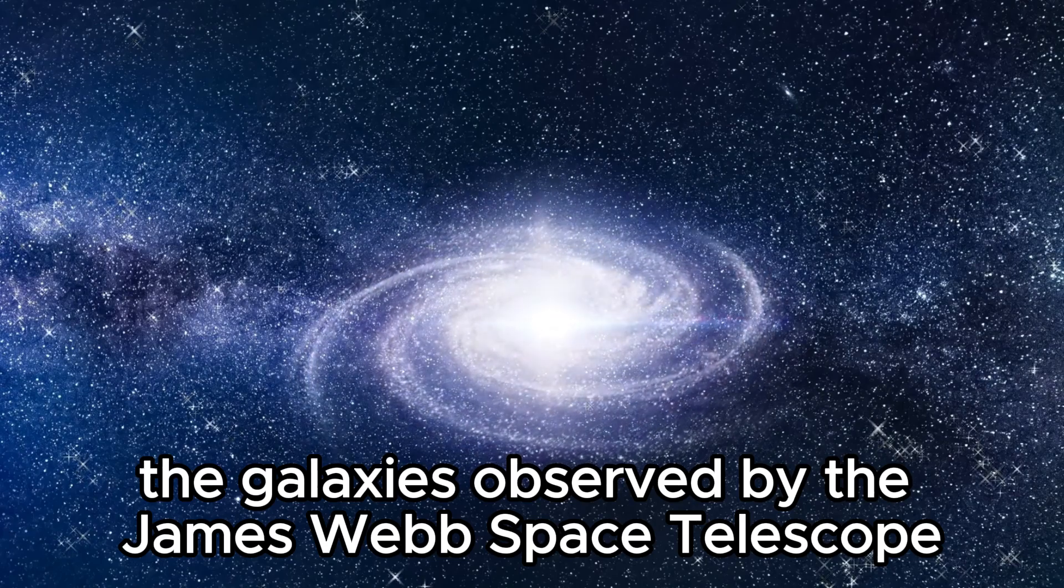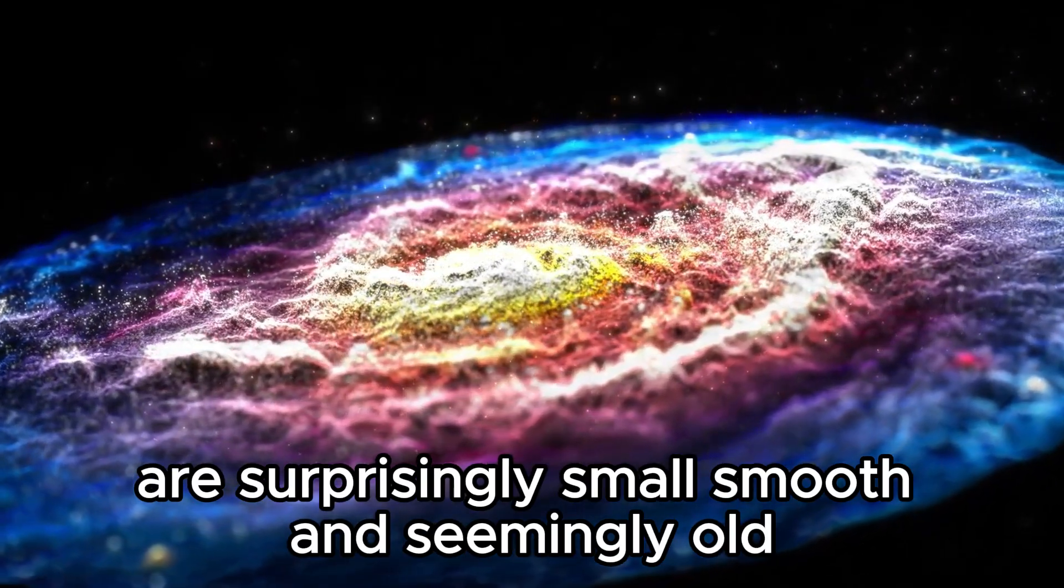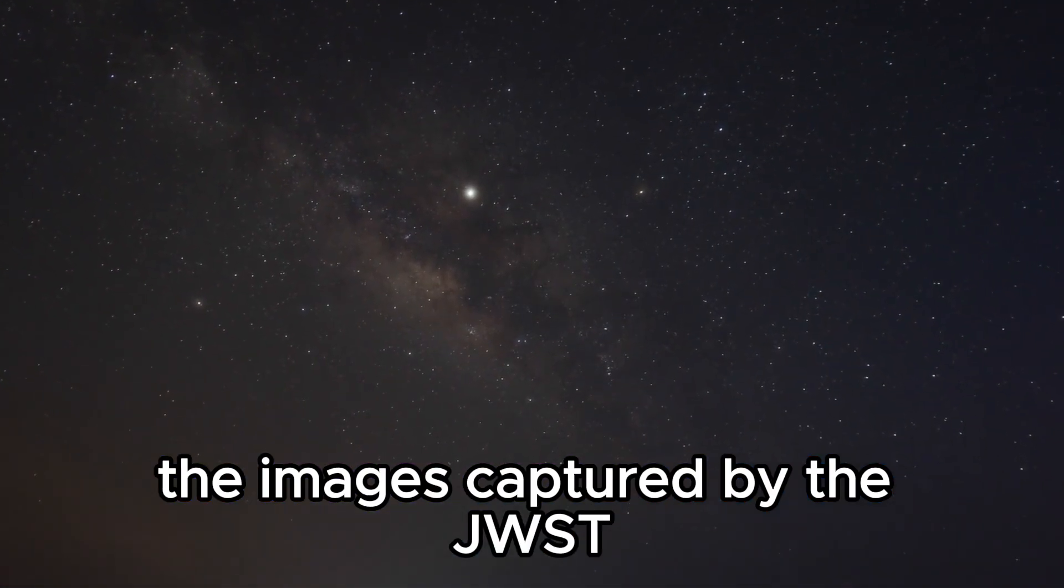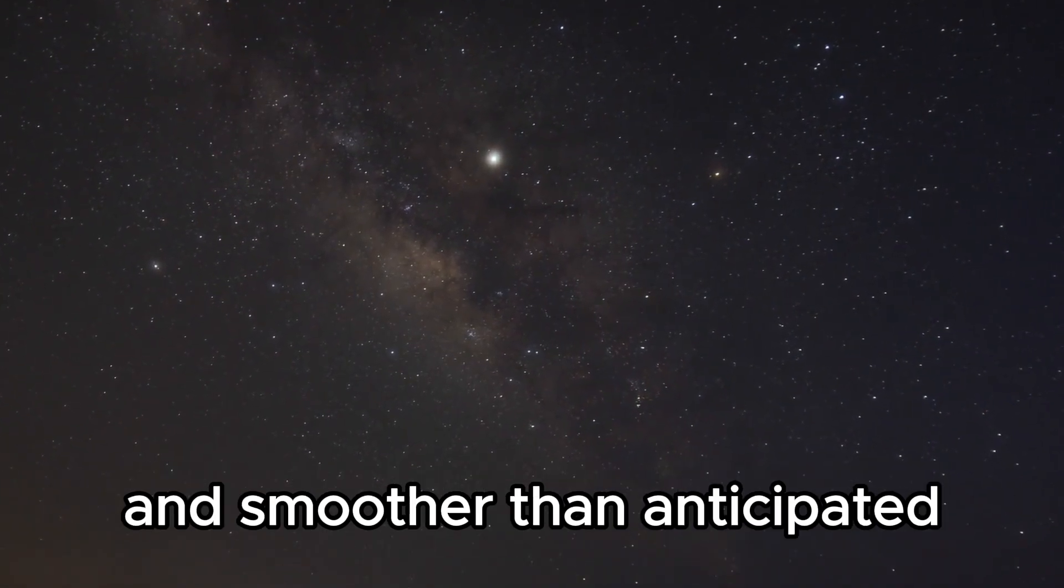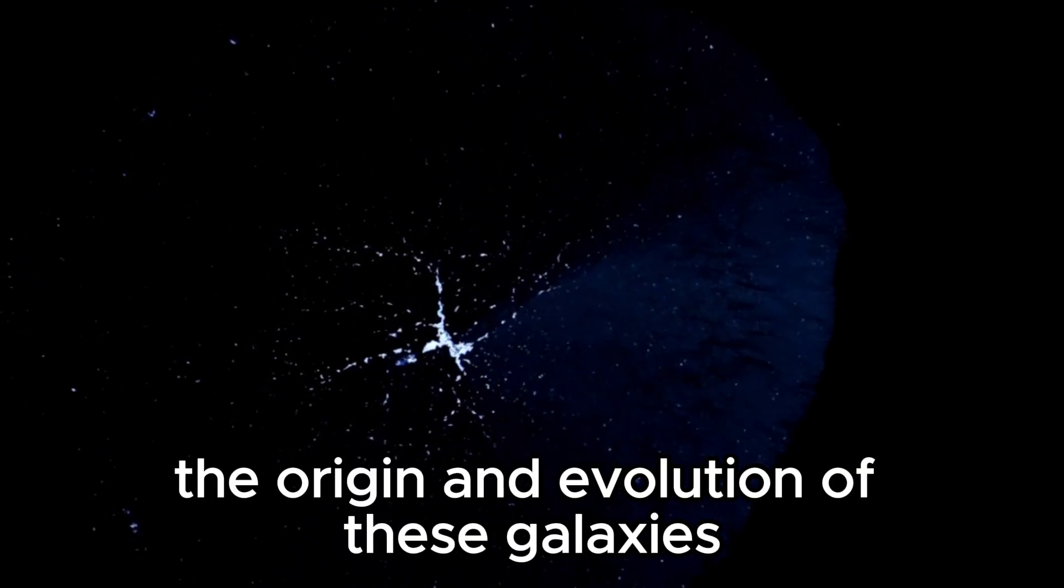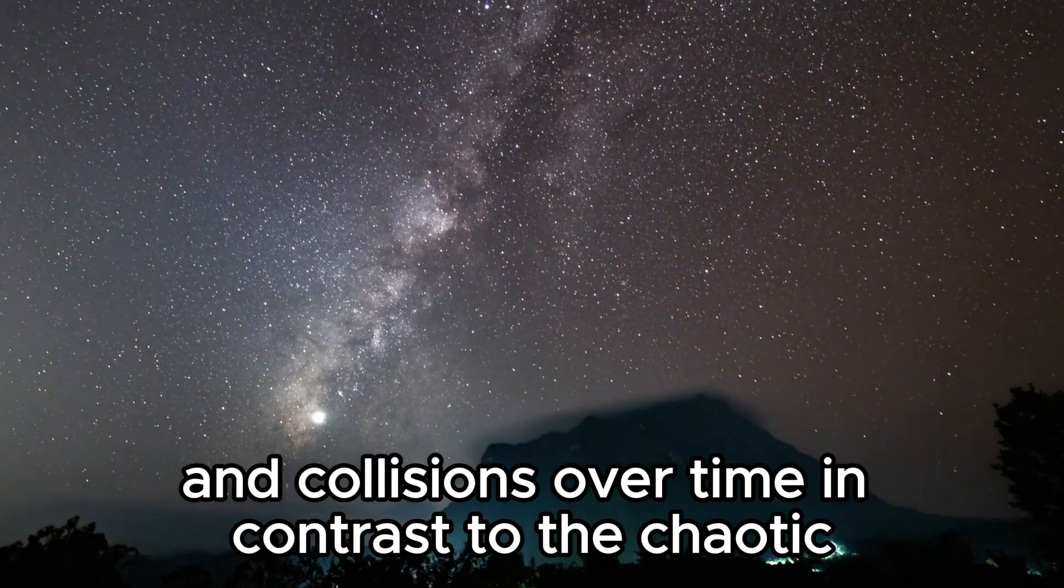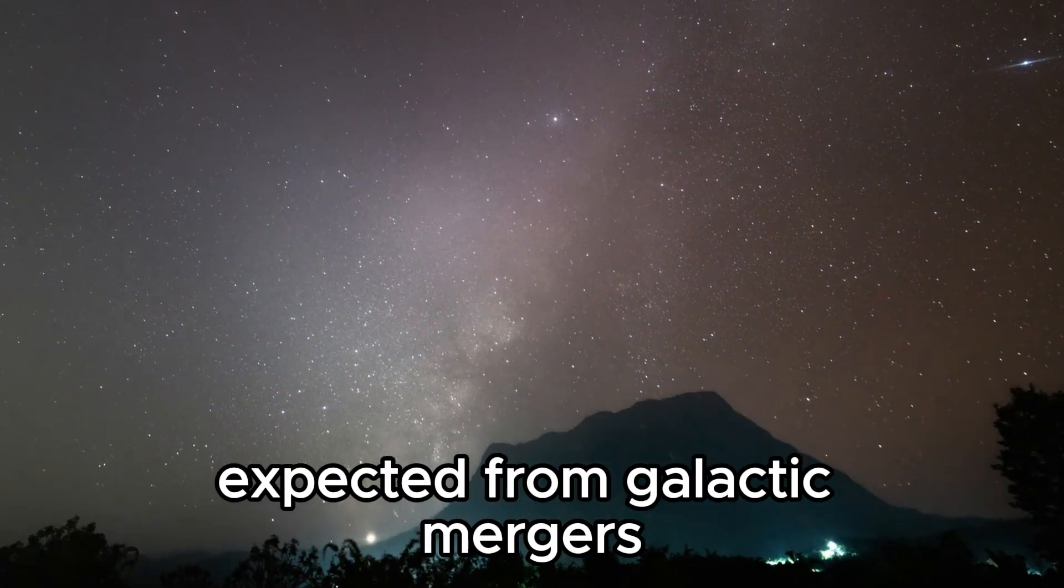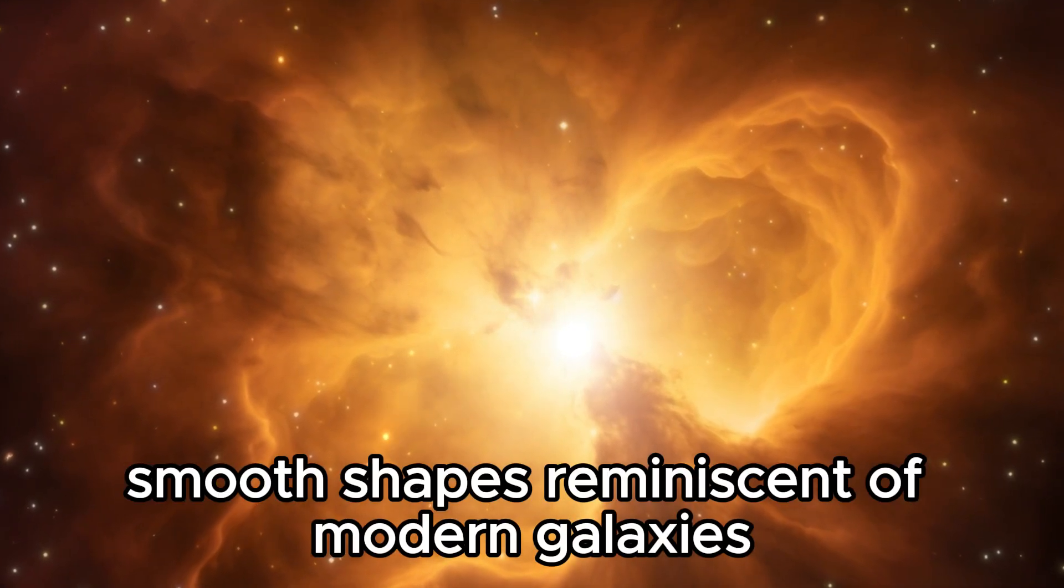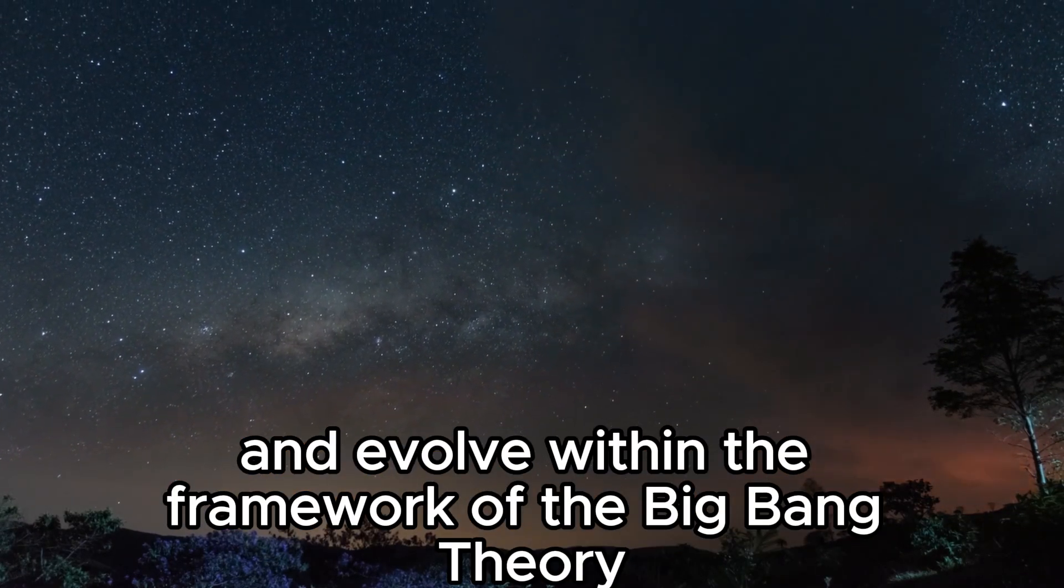However, the galaxies observed by the James Webb Space Telescope challenged this idea. The galaxies discovered by the telescope are surprisingly small, smooth, and seemingly old, defying the expectations set by the Big Bang theory. The images captured by the JWST reveal a population of galaxies that are much smaller and smoother than anticipated, raising questions about the validity of the current cosmological models. The origin and evolution of these galaxies appear to contradict the predictions made by the Big Bang theory, which posits that galaxies should evolve through mergers and collisions over time. In contrast to the chaotic and irregular structures expected from galactic mergers, the galaxies observed by the JWST exhibit well-defined, smooth shapes reminiscent of modern galaxies.